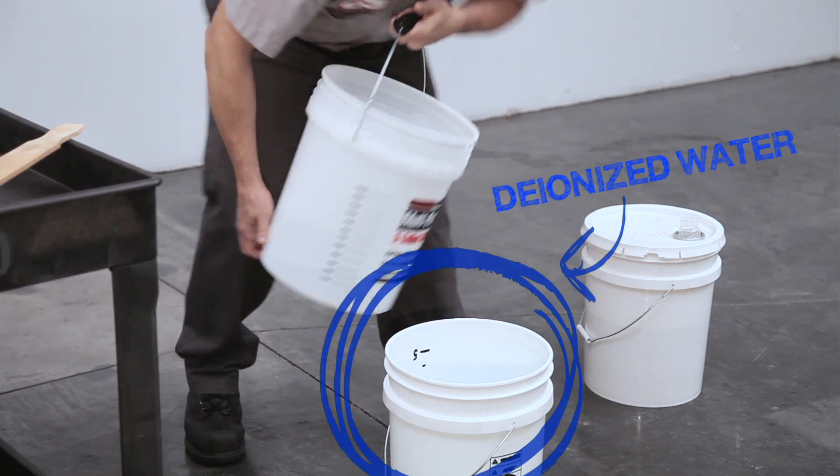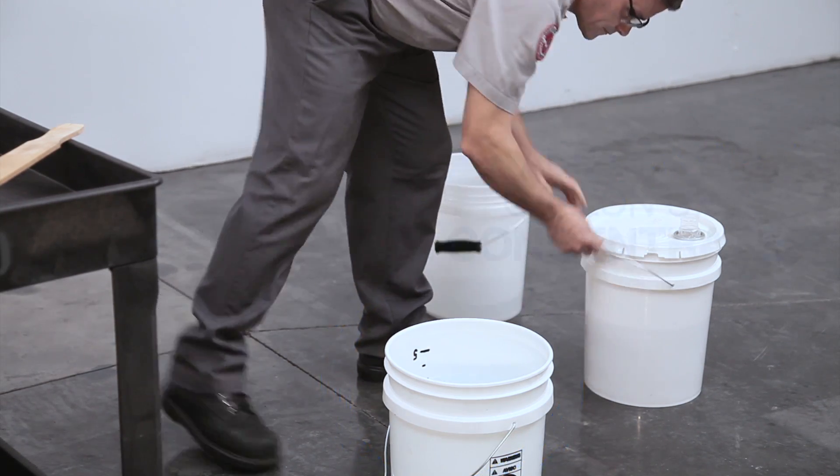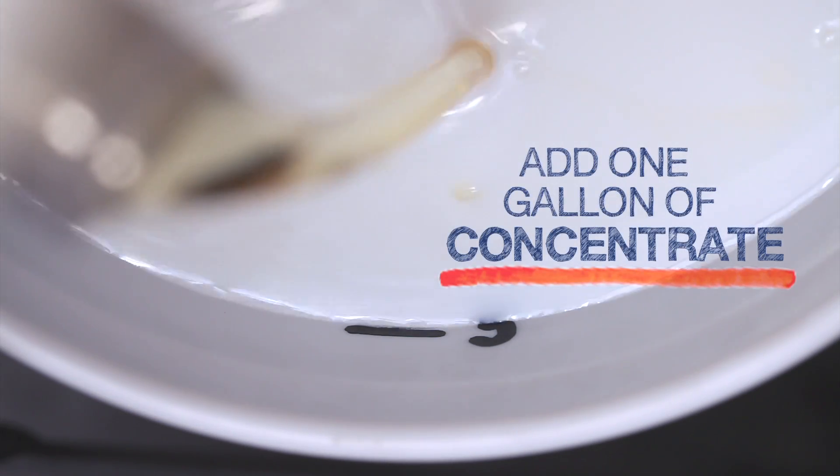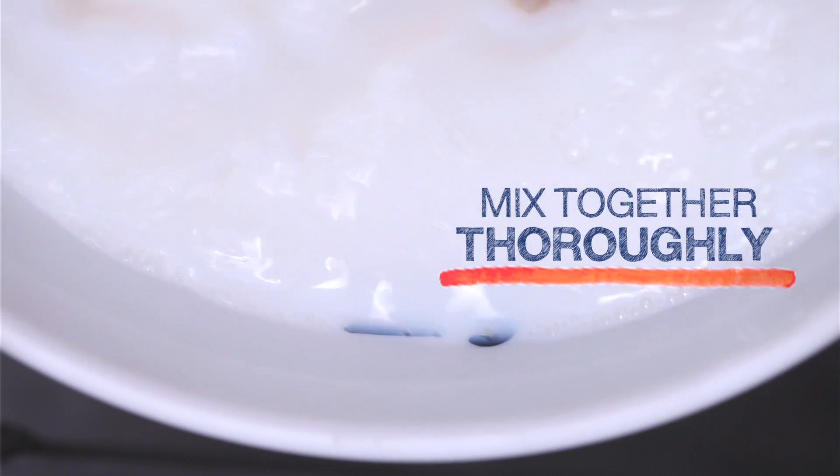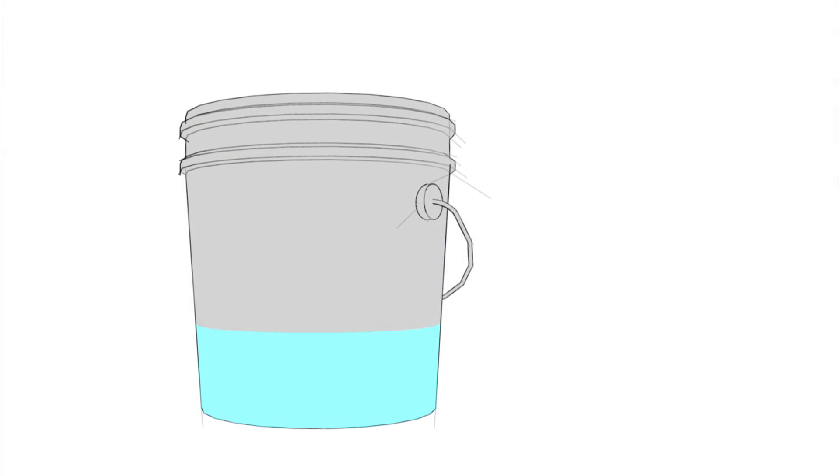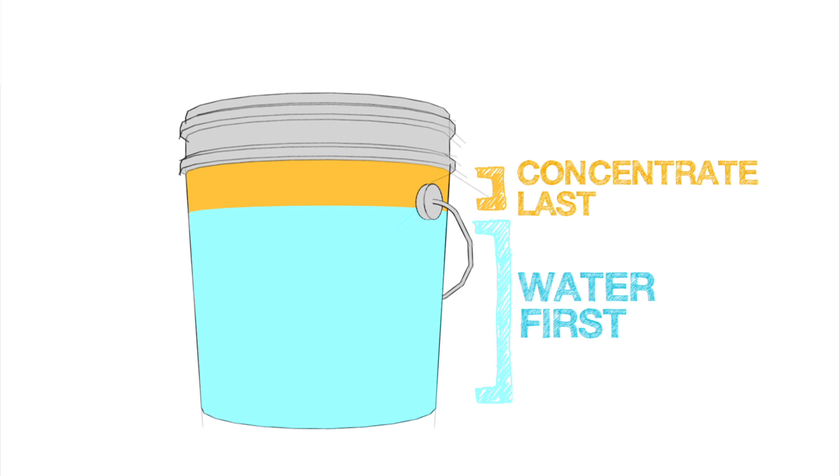So we start with deionized water in the bucket, then we add one gallon of concentrate. Mix the concentrate into the water thoroughly. Remember to always add the water first and then add the concentrate, and never the other way around.